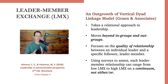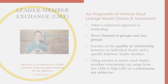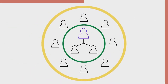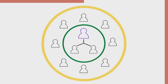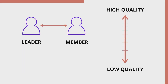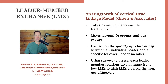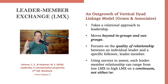Unlike the vertical dyad linkage model, this model moves beyond the idea of in-groups and out-groups, which is either you're in or you're out. This focuses more on the quality of the relationship between the individual leader and the specific follower. Using surveys to assess the leader-member relationship, it can range from low LMX to high LMX — there's a continuum here. You can be relatively close to your leader in a variety of ways; it's not an either-or situation.